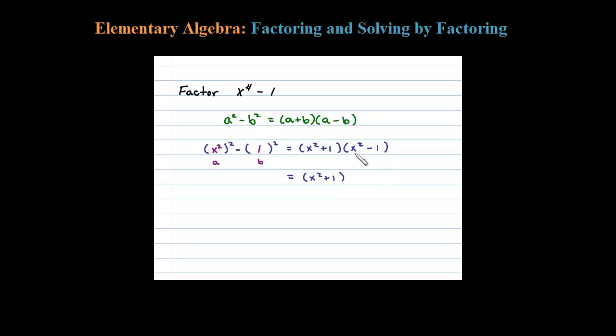Here a is x and b is 1, so that factors further into x plus 1 times x minus 1. So this is the complete factorization of x to the fourth minus 1. Look for the factors to factor further using the special products.